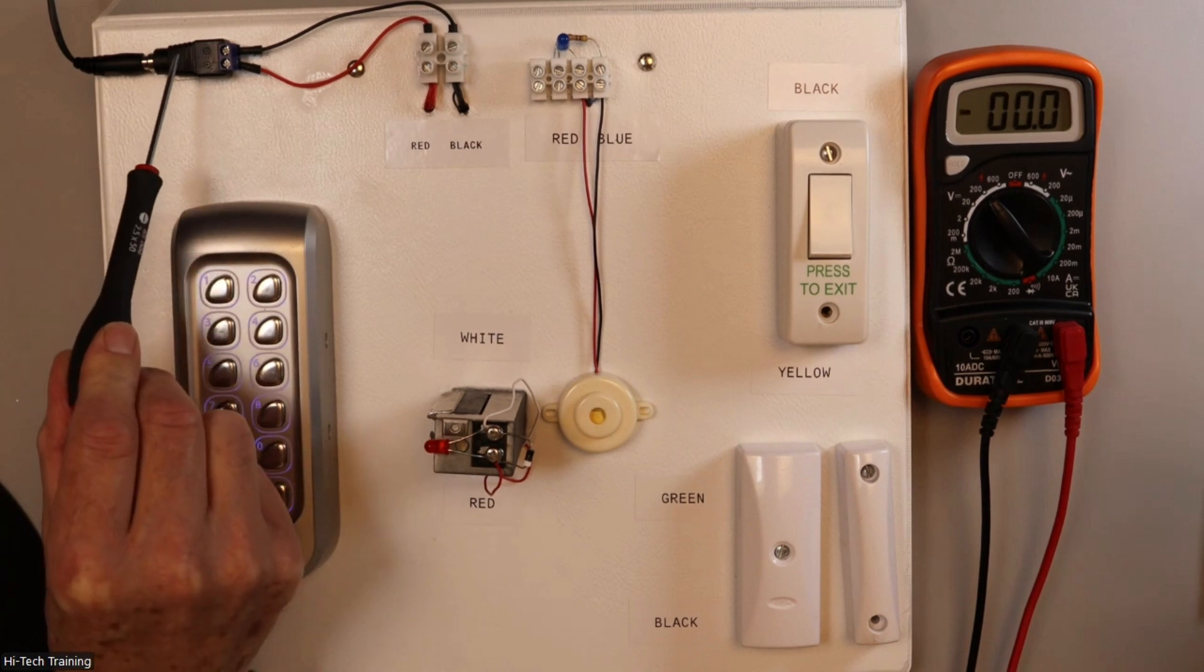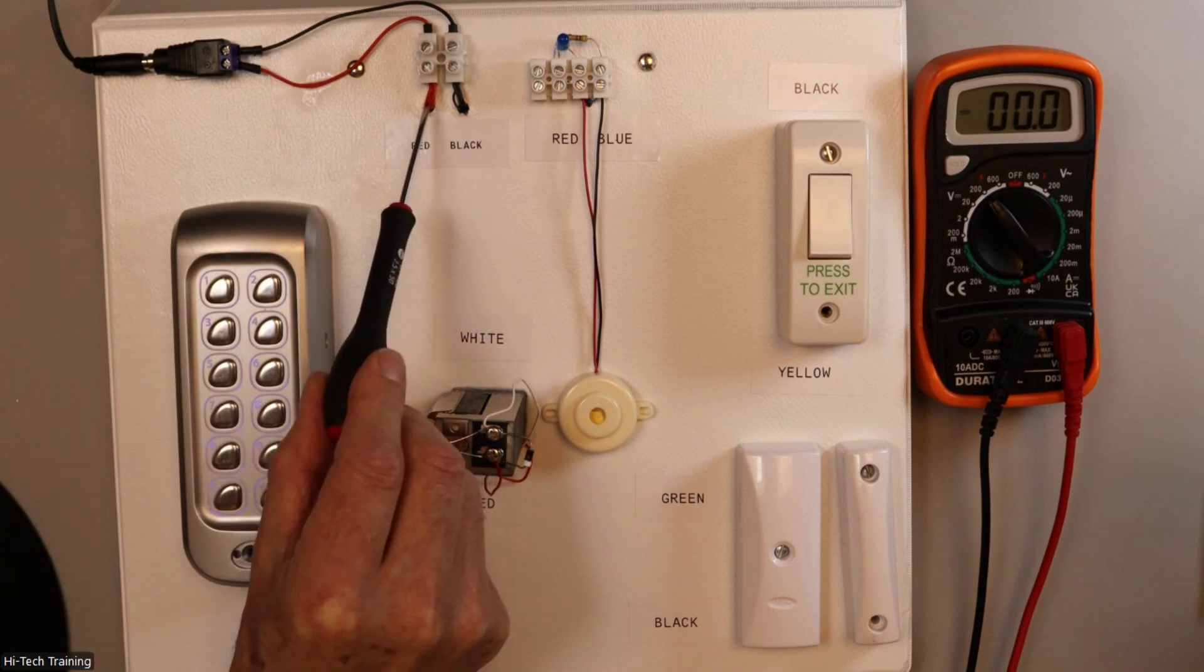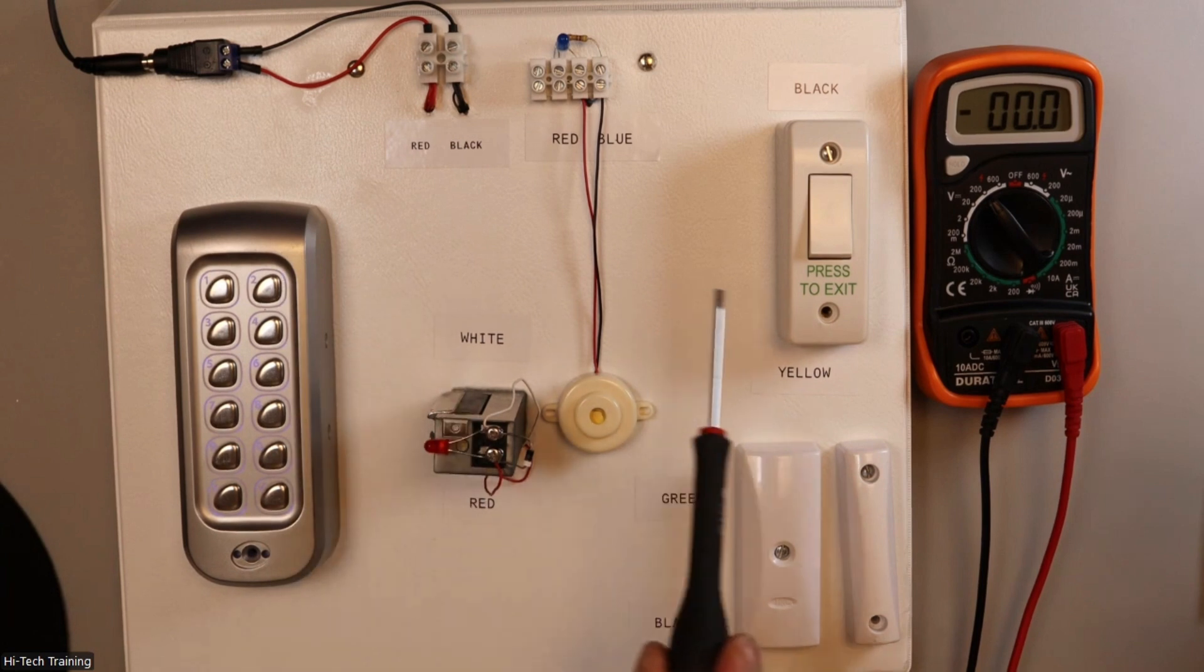We've got an entry here of 12 volts DC, red and black indicating that. We're feeding the wires out in parallel, positive and negative, to all of the devices that we have.